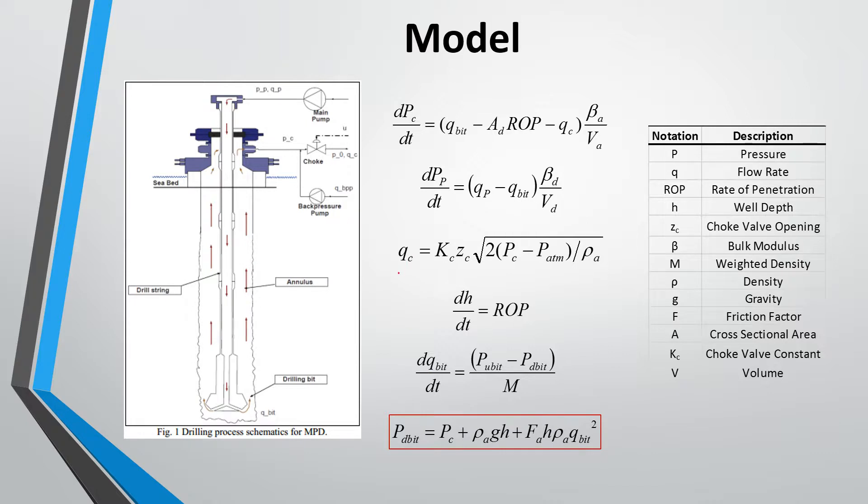For this model, within the model there's an equation that's embedded to calculate the pressure on the drill bit which is our controlled variable. Here on the right we just have the notation for the different parameters and variables. What we did for the specific values that we used is that we either looked them up in literature or back calculated them from the results that were done in literature.